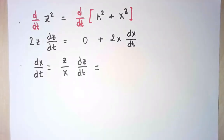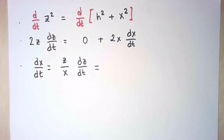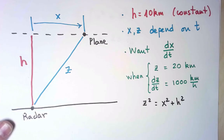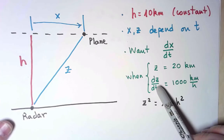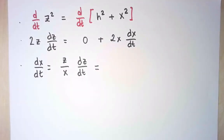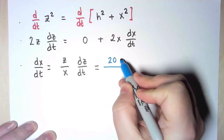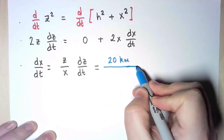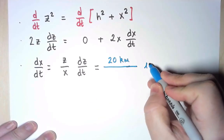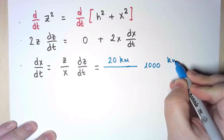And now I will simply evaluate. Do I have all the values I need? Well, almost. I know the value of z and the value of dz/dt. So I need to evaluate when z is 20 km and the derivative is 1,000 km per hour.